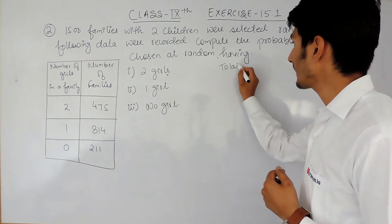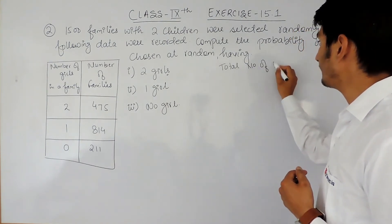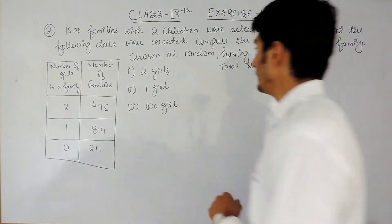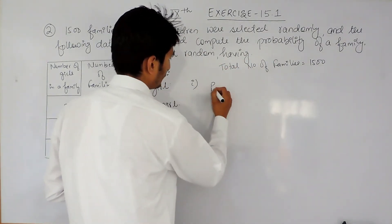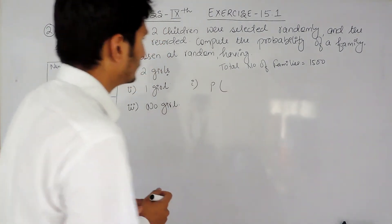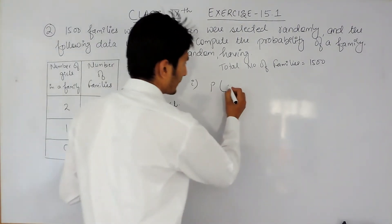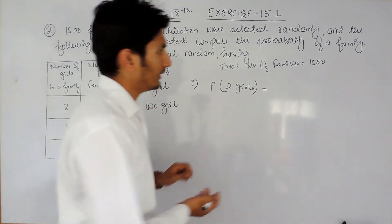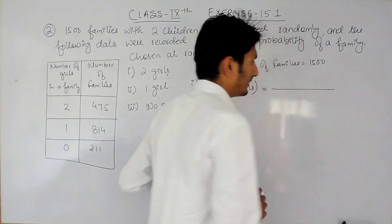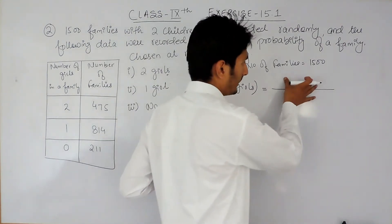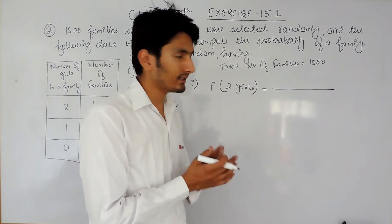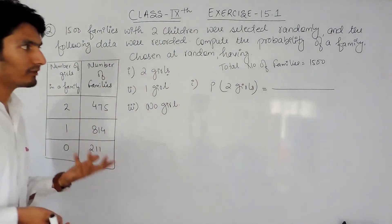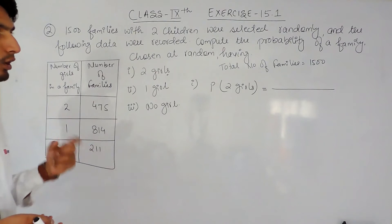Now we have to find the probability of a family having two girls. The total number of families is given to us as 1500. The formula will remain the same — in the denominator it will be the total number of trials, and in the numerator will be the number of trials in which this event occurred. Here, the total number of trials is considered as the total number of families.